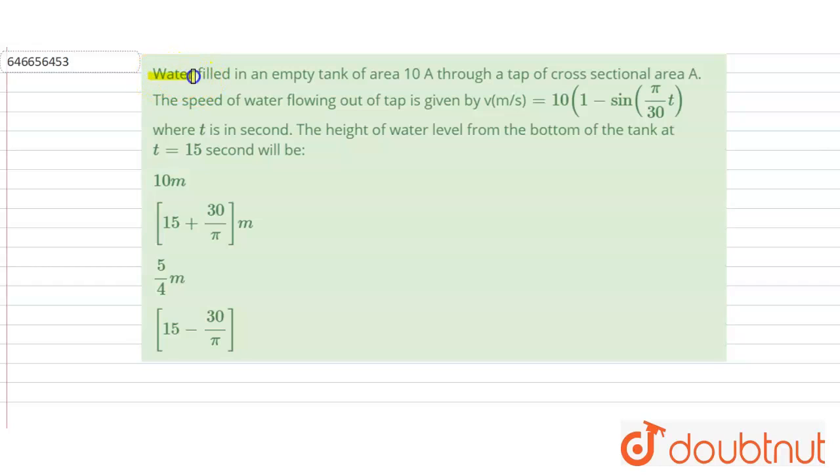The question is: Water filled in an empty tank of area 10A through a tap of cross-sectional area A. The speed of the water flowing out of tap is given by v equal to 10 into 1 minus sin pi by 30 t, where t is in the second. The height of the water level from the bottom of the tank at t equal to 15 seconds will be.